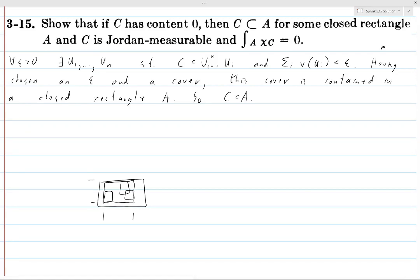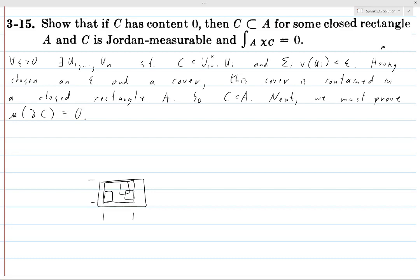Next, we must prove that C is Jordan measurable. That means the boundary has measure zero — I'll write that as mu of the boundary of C equals zero. Mu of a set is the measure-theoretic notation for the measure of the set, since a measure is a function that takes in a set and returns a number. Given any epsilon greater than zero, choose U1 through Un as before.